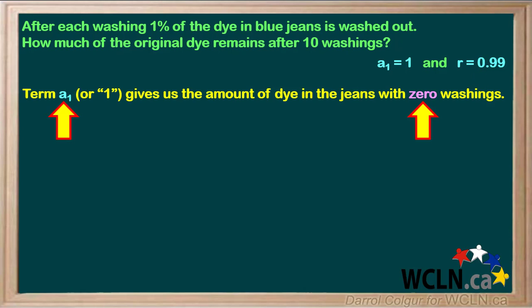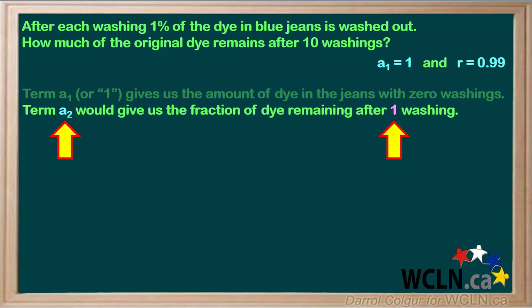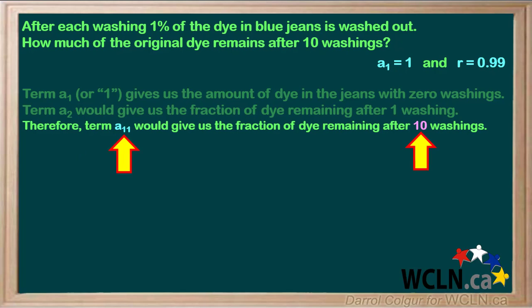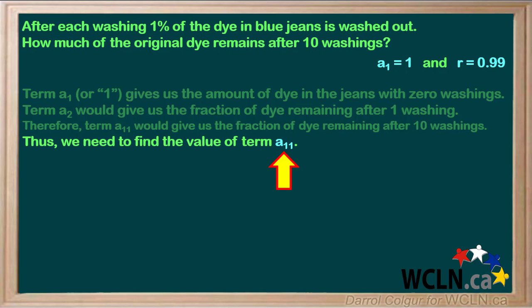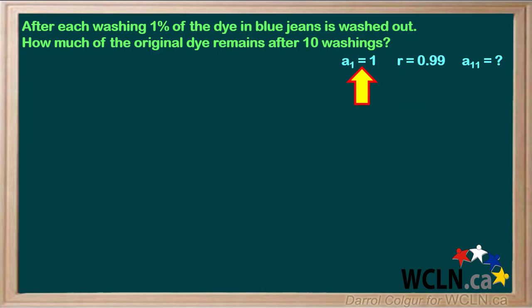Term A1, or 1, gives us the amount of dye in the jeans before they are washed, or with 0 washings. So term 2 would give us the fraction of the dye remaining after 1 washing. Therefore, term A11 would give us the fraction of the dye remaining after 10 washings. This means we need to find the value of term A11.